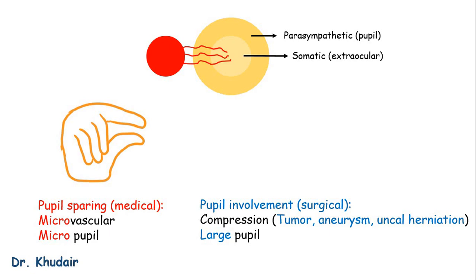The first fibers to be compressed are the ones on the periphery, which are the parasympathetic fibers, and this will result in a dilated pupil. And since these lesions are large, this will result in a large pupil.